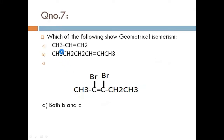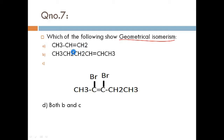Next question: which of the following shows geometrical isomerism? Looking at the first option, it will NOT show geometrical isomerism. Why? Because the double bonded carbon has two hydrogen atoms attached — meaning two same groups are attached — so it will not show geometrical isomerism.